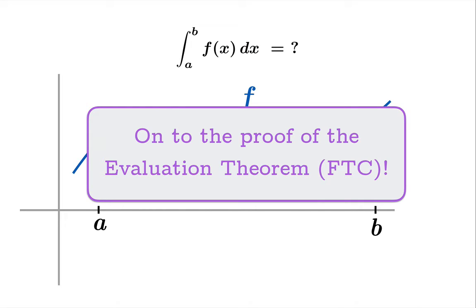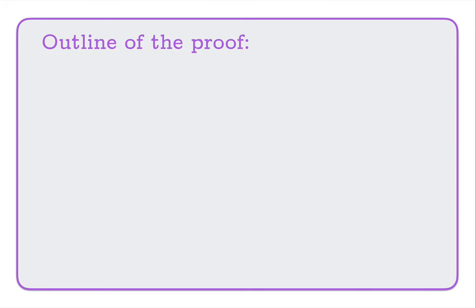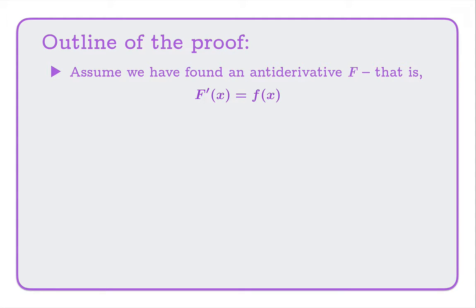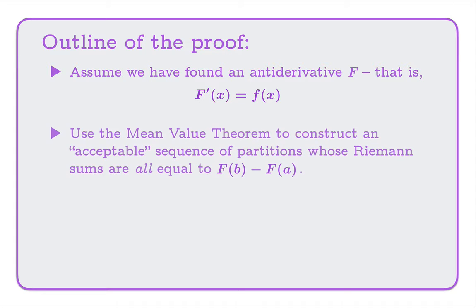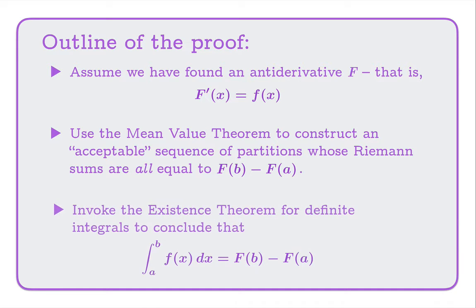Now it's on to the proof of the evaluation theorem. Here's the outline: first we'll assume we've found an antiderivative function capital F whose derivative is the integrand function. Then we'll use the mean value theorem to construct an acceptable sequence of partitions whose Riemann sums are all equal to the same value — namely F evaluated at one end subtracted from F evaluated at the other. Then we'll invoke the existence theorem for definite integrals to conclude that the definite integral equals that same value.